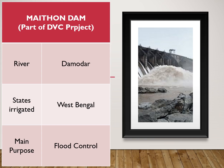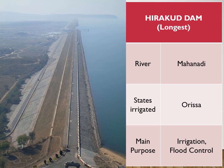The Methon Dam is built on the river Damodar, which was earlier known as the 'Sorrow of Bengal' as it used to flood every year and cause great destruction. The states irrigated by this multipurpose project are West Bengal. The main purpose of constructing this dam was to control floods. The Hirakud Dam, built on the river Mahanadi, is the longest dam in Asia. It is an indigenous project built by the Odisha state government, so Odisha gets the maximum benefit. The main purpose of this dam was irrigation as well as flood control of the Mahanadi river.